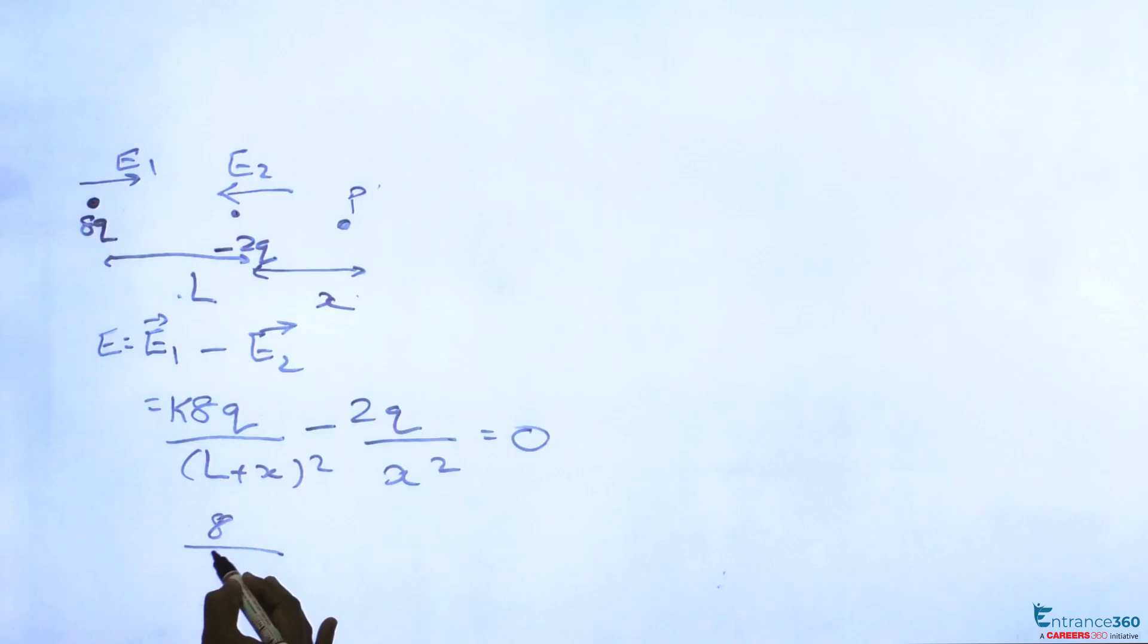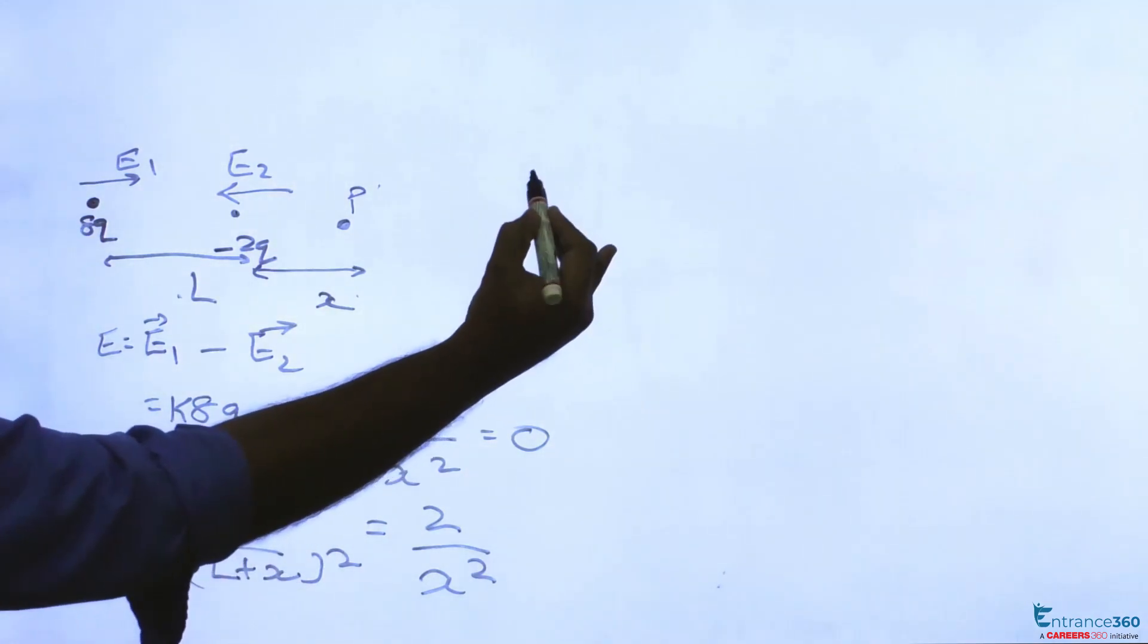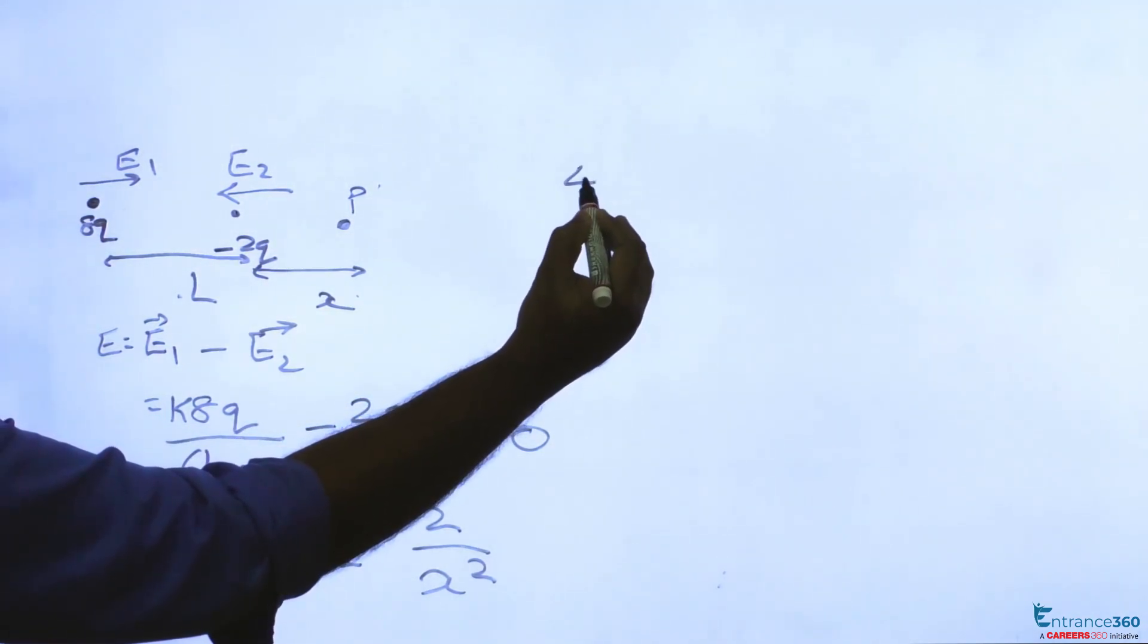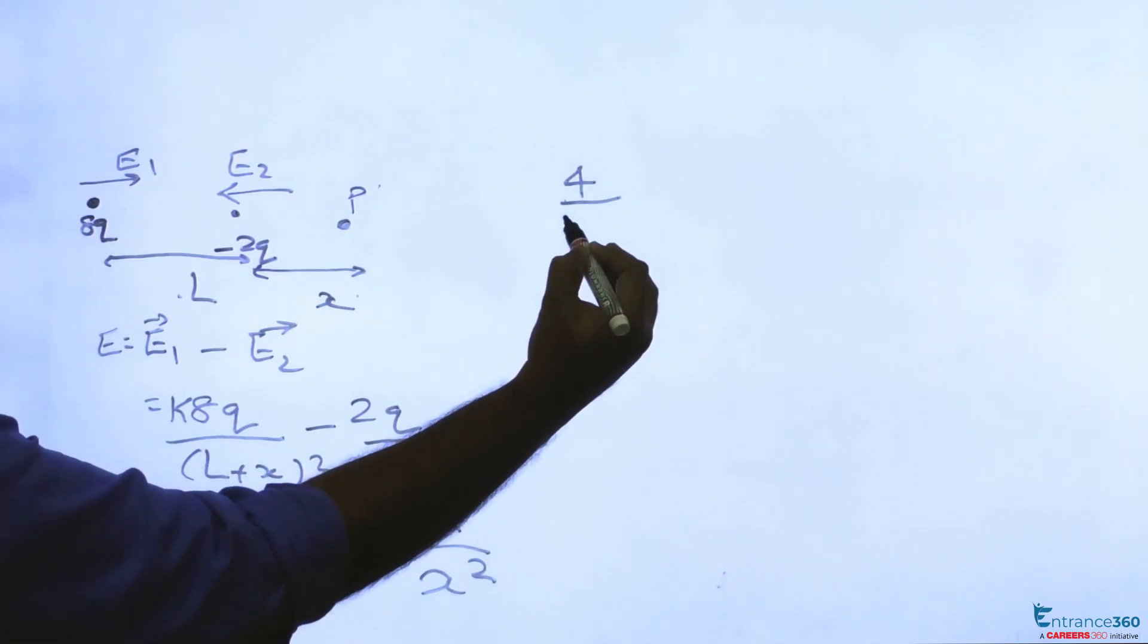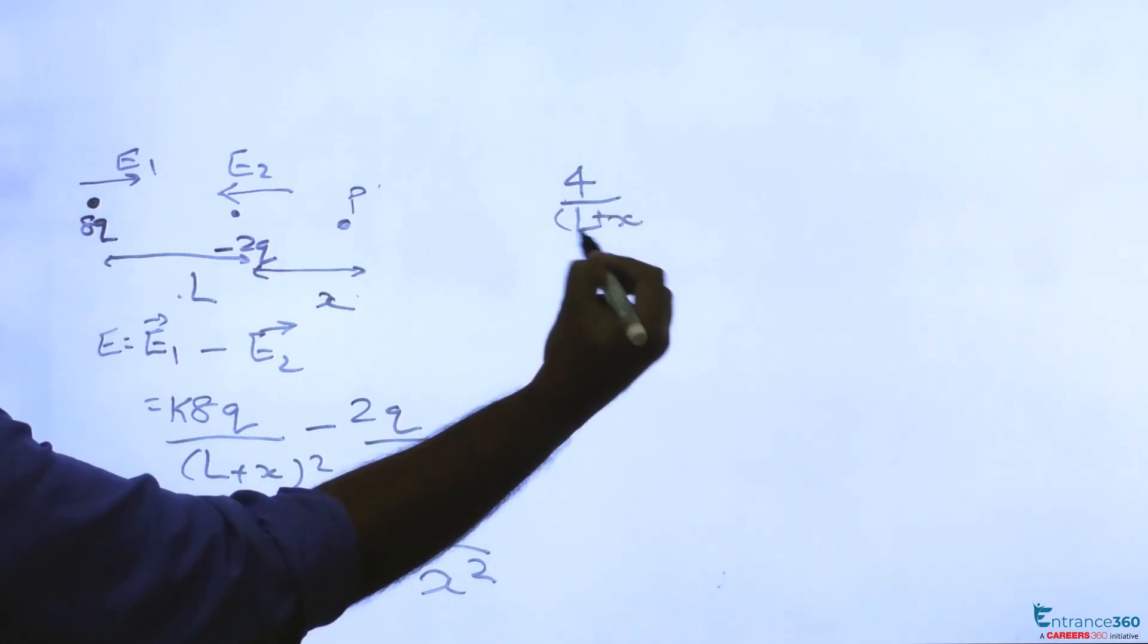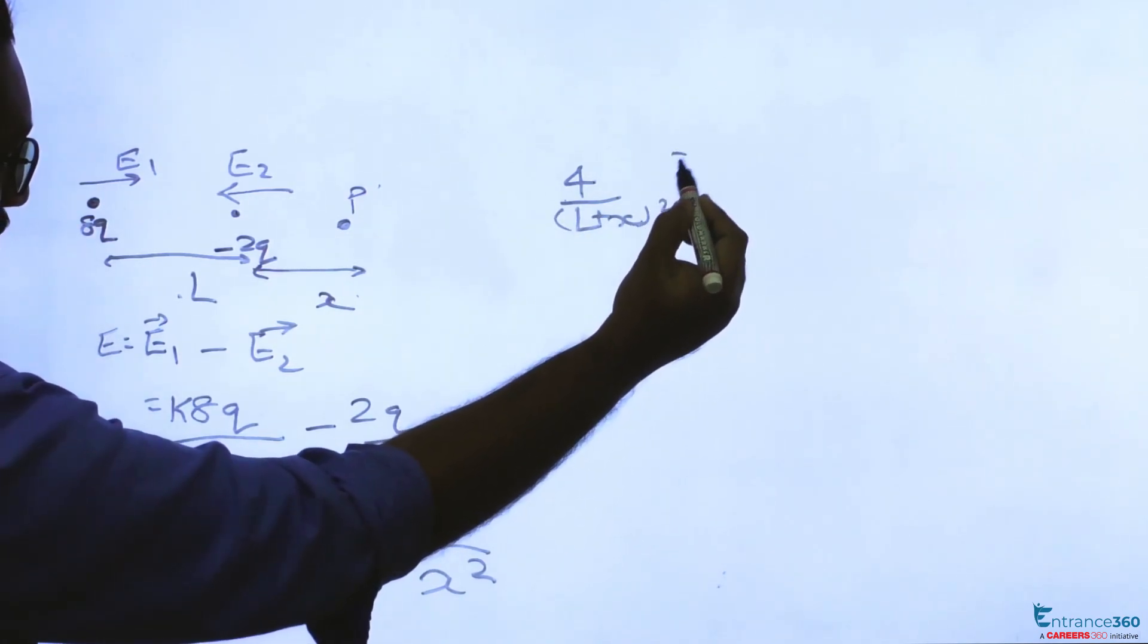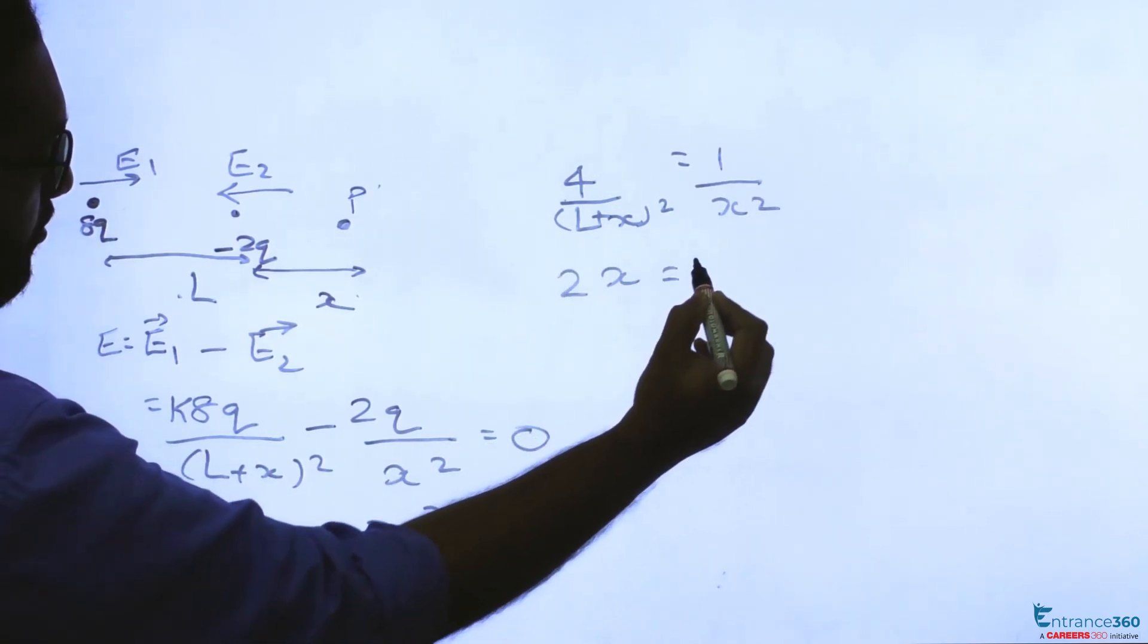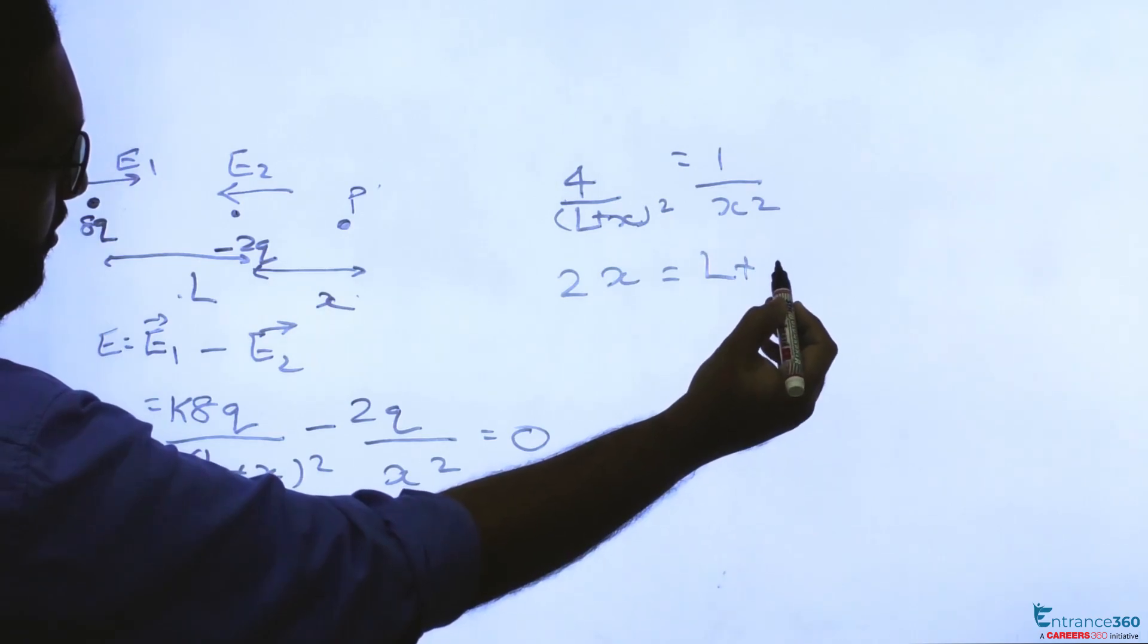Now we can write 8 by (L plus x) whole square equals 2 by x square, or we can write 4 by (L plus x) whole square equals 1 by x square, or 2x equals L plus x.